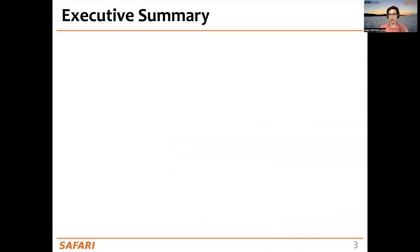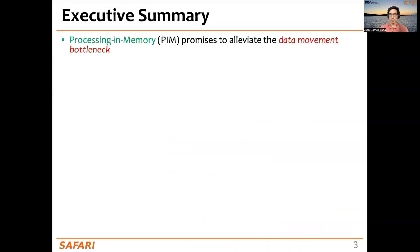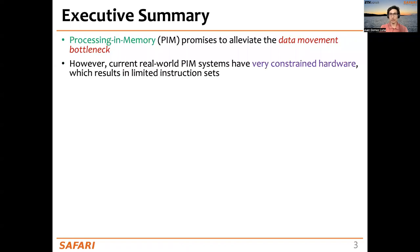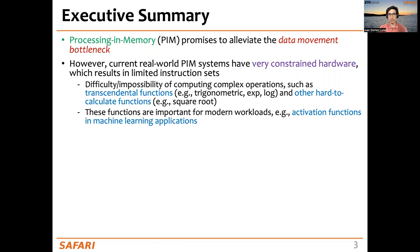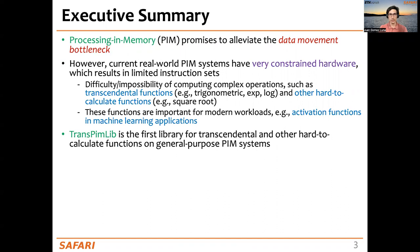Let's start with a brief executive summary. Processing in Memory promises to alleviate the data movement bottleneck. However, current real-world processing in memory systems have very constrained hardware, and this limits the variety in instruction sets. So it's difficult or even impossible to compute complex operations — for example, transcendental functions and other hard-to-calculate functions such as the square root. These functions are important for modern workloads, and that's the case of activation functions in machine learning applications.